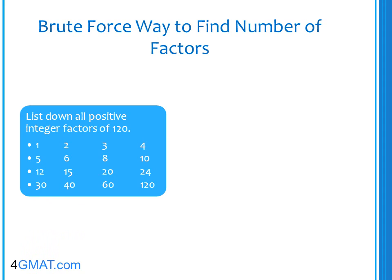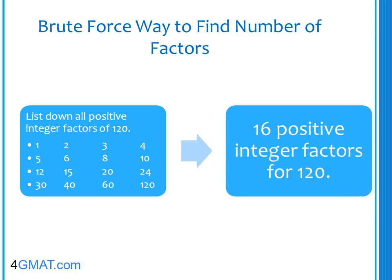I have listed down all factors of 120. The factors are 1, 2, 3, 4, 5, 6, 8, 10, 12, 15, 20, 24, 30, 40, 60, and 120. The count of these factors gives us 16. So 120 has a total of 16 positive factors.